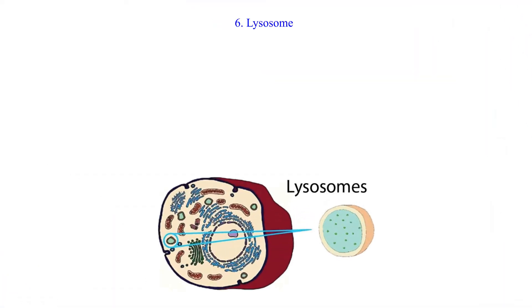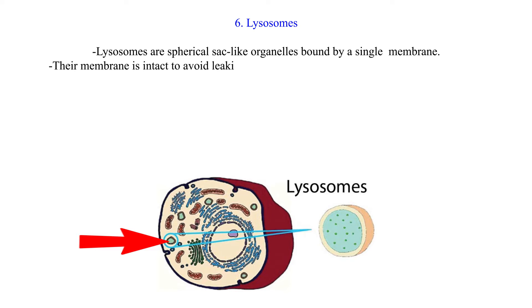6. Lysosomes. Lysosomes are spherical sac-like organelles bound by a single membrane. Their membrane is intact to avoid leaking of enzymes which will then destroy the whole cell.